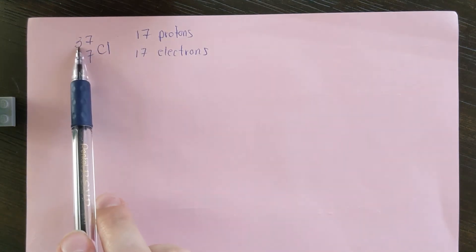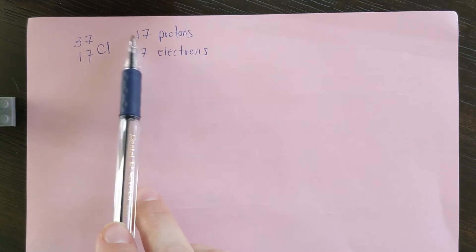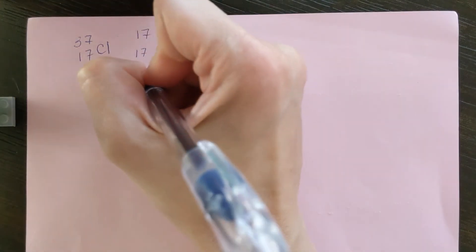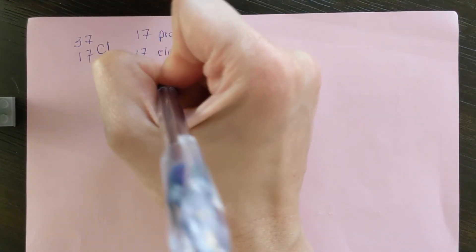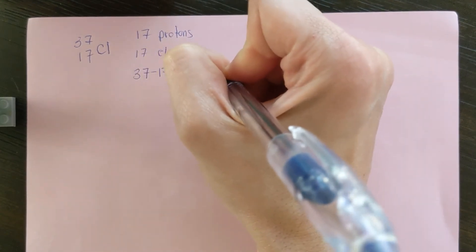So if we look at our 37, this 37 is the number of protons and neutrons. So for our neutrons, we have 37 minus 17 equals 20 neutrons.